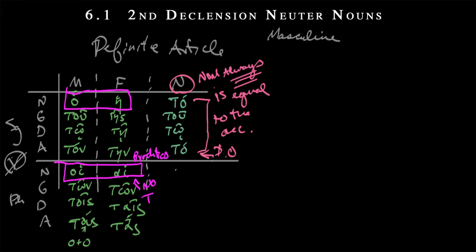But then if we get back to the plural, we have ta, and that's a short alpha — books won't write in the breve mark, but we have that here. But then again, in the obliques, we look a lot like the masculine. And then the same rule: nominative in the singular and plural is always equal to the accusative in the neuter. So we have a short alpha, ta, just like that.